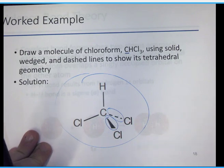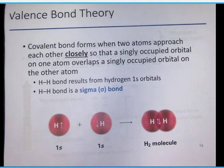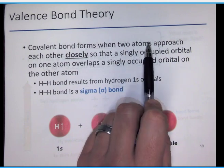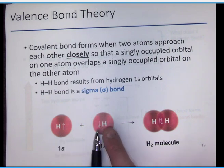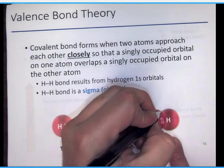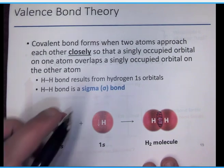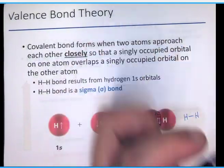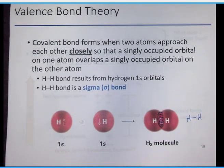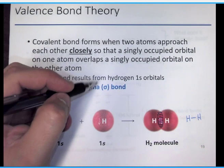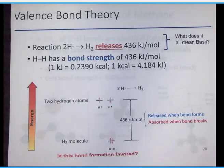With valence bond theory, covalent bonds are formed when two atoms approach each other closely and their orbitals overlap. That overlapping region is the bond between the hydrogens — when you see H bonded to H, that bond exists because of that overlap. Specifically, this direct overlap is called a sigma bond.